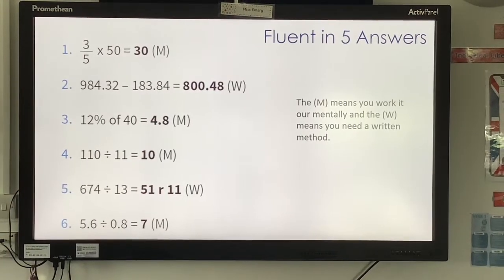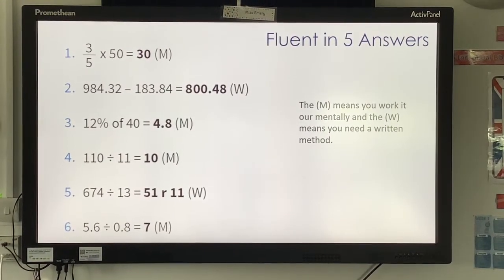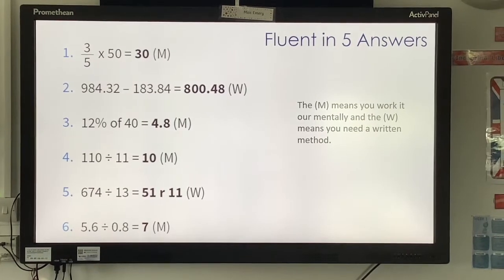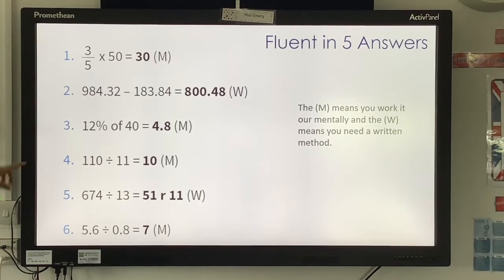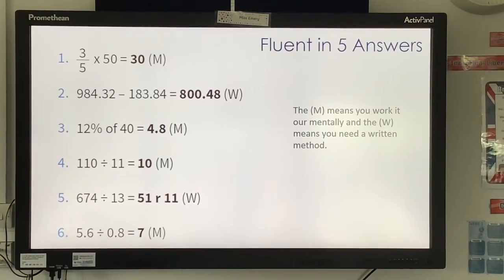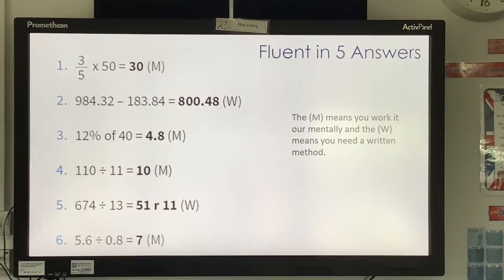Number one, three-fifths times 50 is 30. 984.32 take away 183.84 is 848. 12% of 40... 800.48 number two. Sorry, 800.48. Getting too carried away, trying to do it quickly.